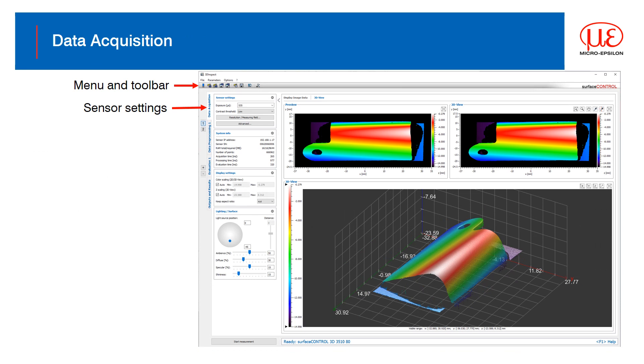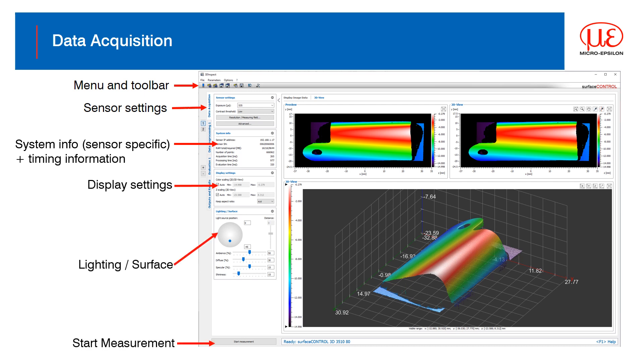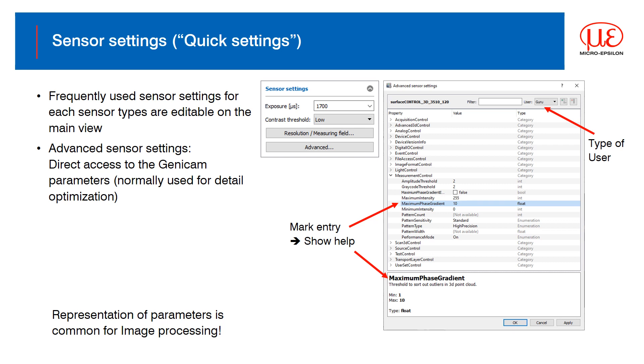In the data acquisition tab, you are simply preparing the sensor to acquire and generate the point cloud. The screen gives information specific to the sensor connected along with timing information that helps determine the total time required for making the measurement. Depending on the type of sensor you have connected, the settings will change to reflect that particular type of sensor. Further to the main sensor settings being directly available for adjustment like exposure and resolution, you can also go deeper with the advanced settings. This gives you access to the Genicam parameters of the sensors and are represented in the same way as other common image processing software. For vision integrators, this should be quite familiar.